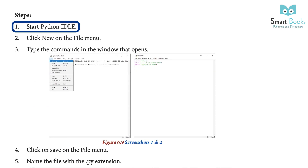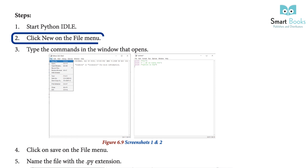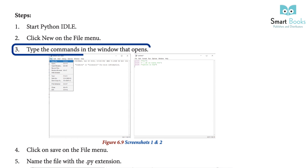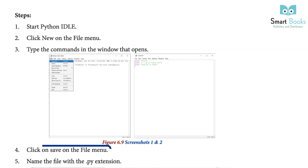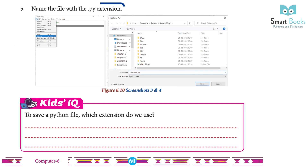Script mode — follow these steps to use script mode: 1. Start Python IDLE. 2. Click New on the File menu. 3. Type the commands in the window that opens. 4. Click on Save on the File menu. 5. Name the file with the .py extension.